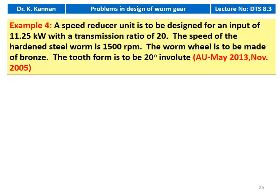This is Example number 4. A speed reducer unit is to be designed for an input of 11.25 kW with a transmission ratio of 20. The speed of the hardened steel worm is 1500 RPM. The worm wheel is to be made of bronze. The tooth form is 20 degree involute. This question appeared in May 2013 and November 2005.